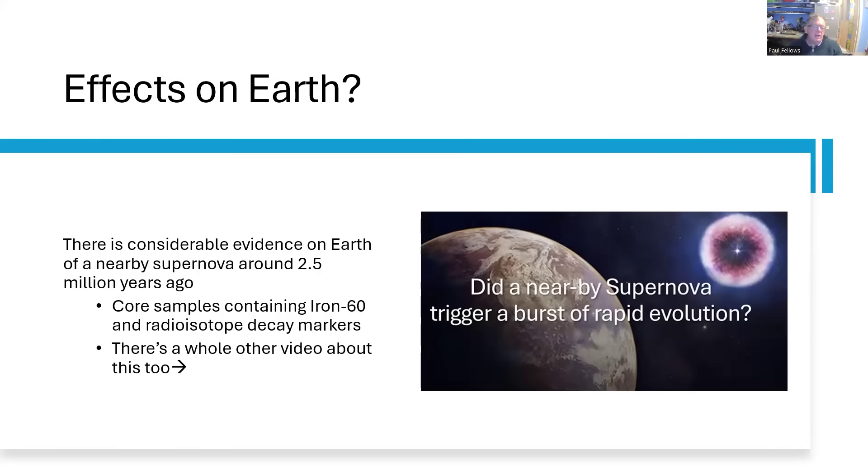So 1400 light years away now, 2 million years ago, the distance would have been slightly different. And there is considerable evidence on the Earth that we did suffer side effects of a nearby supernova about 2.5 million years ago. Was this the one? We're not sure.